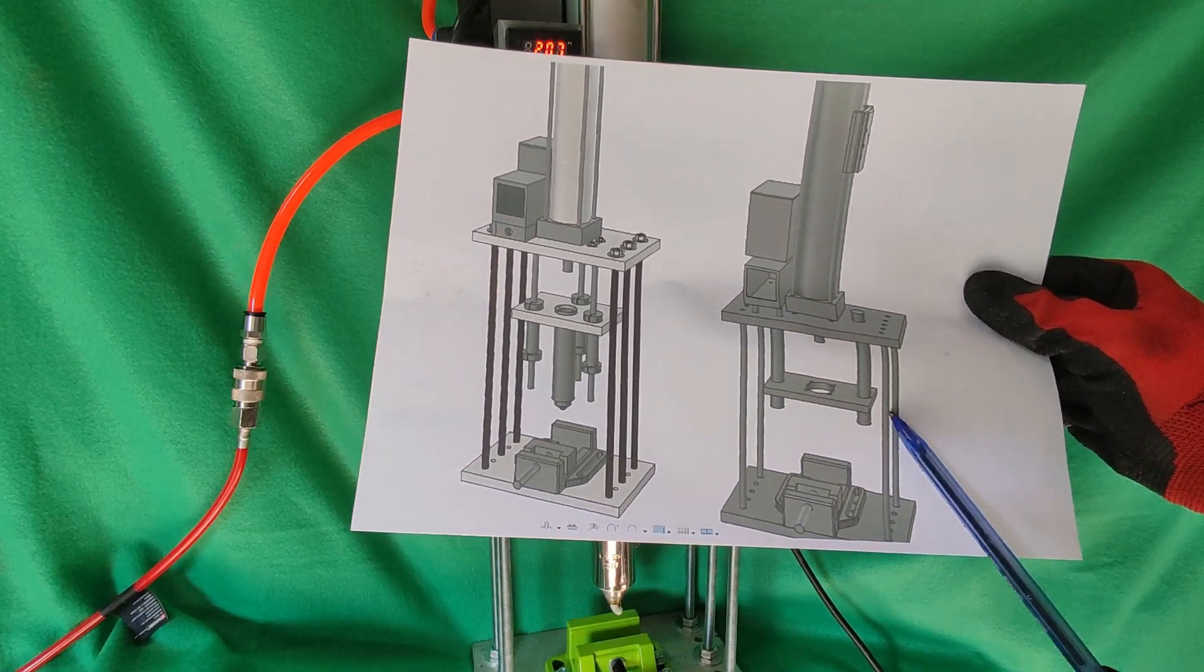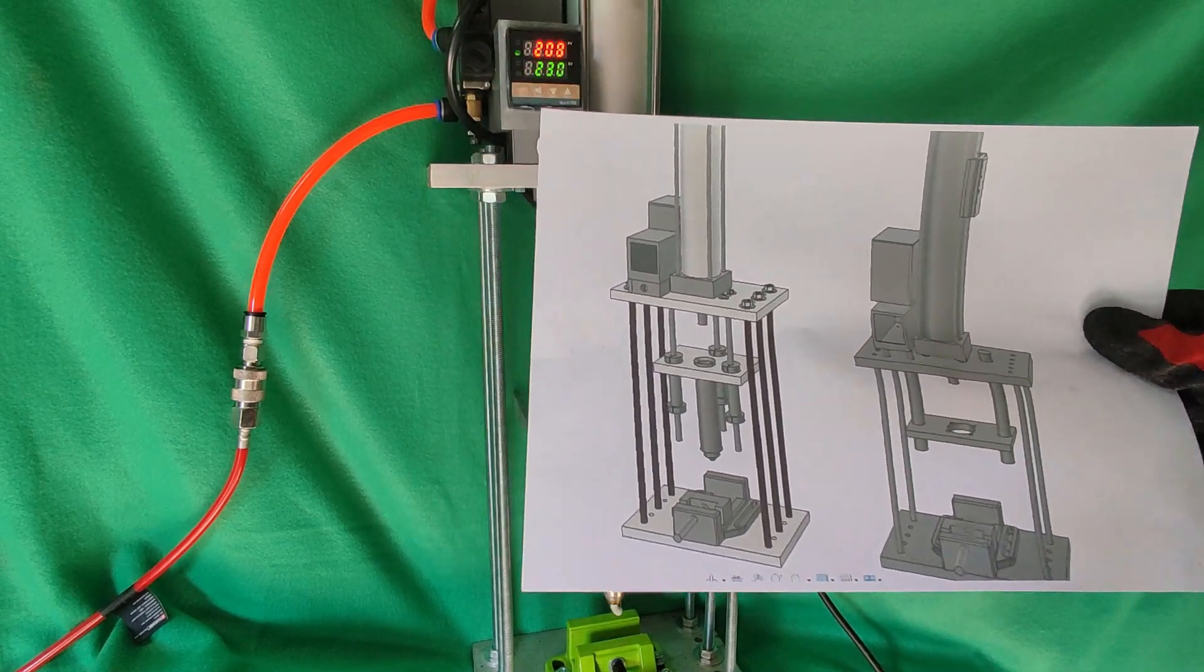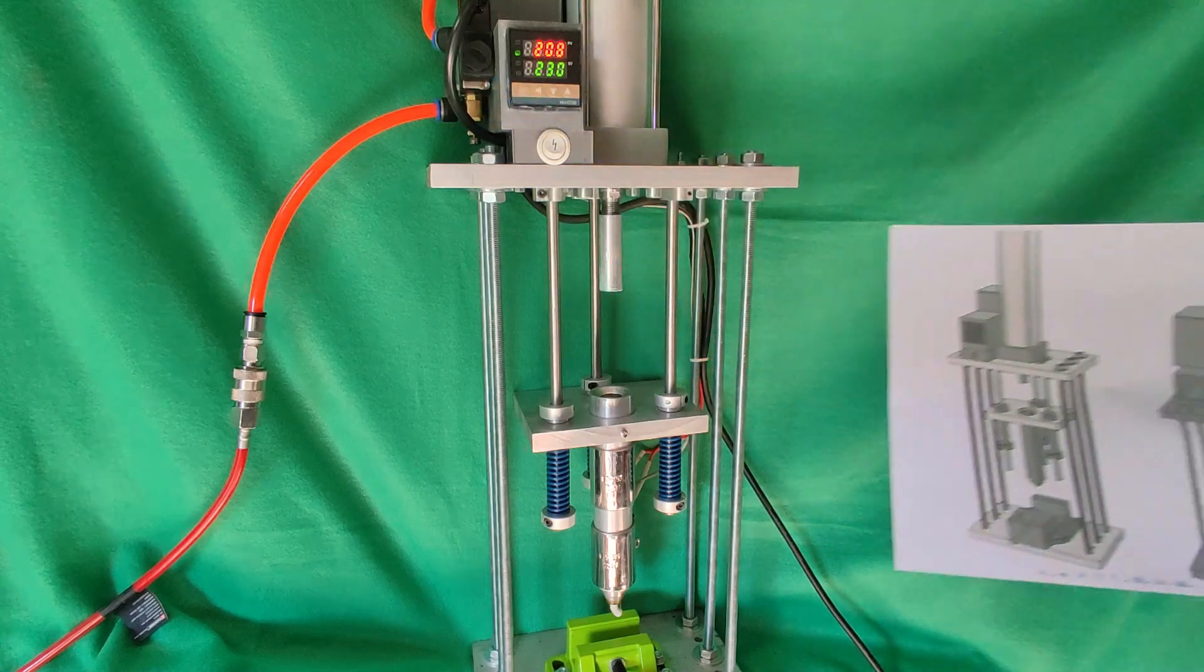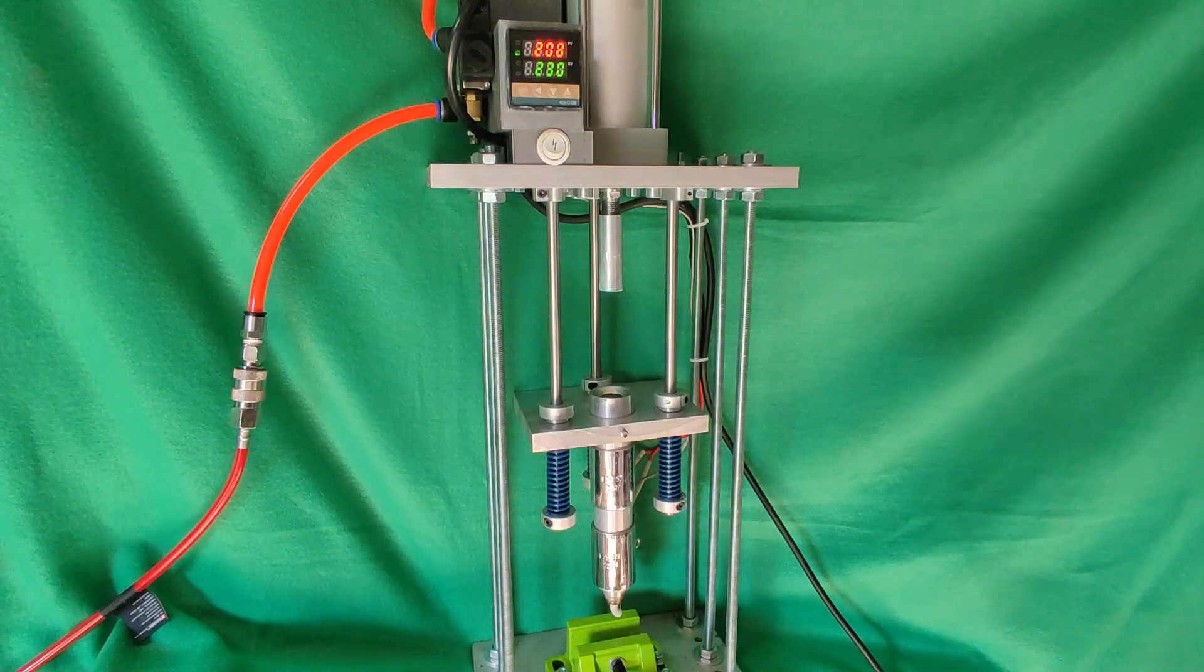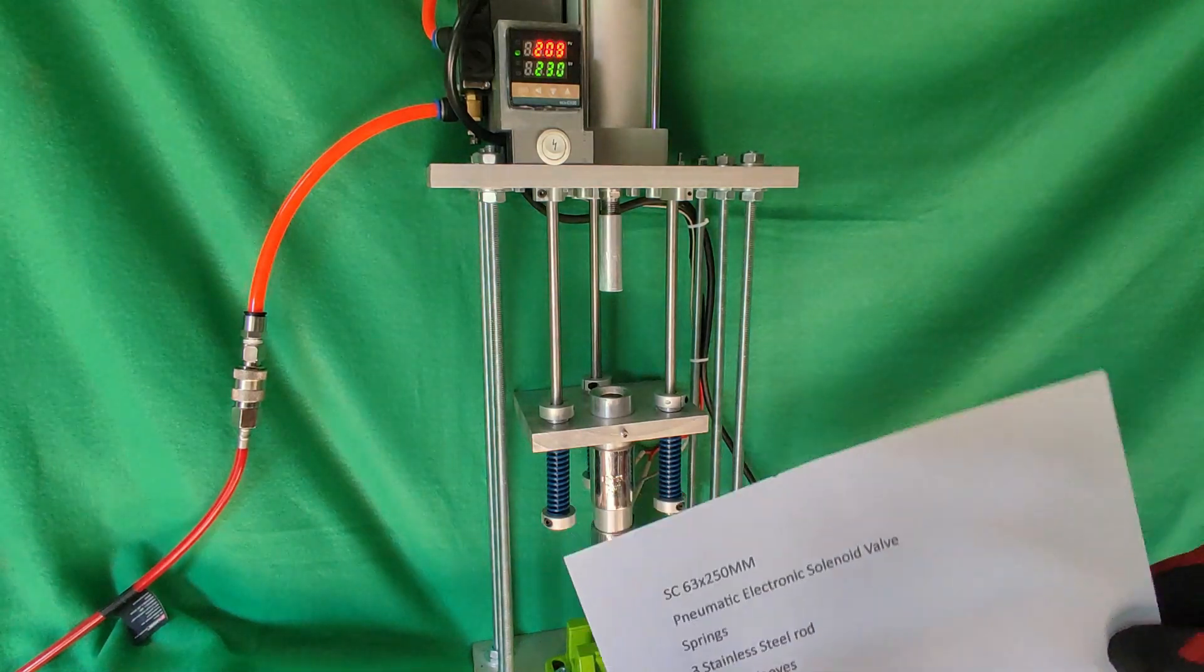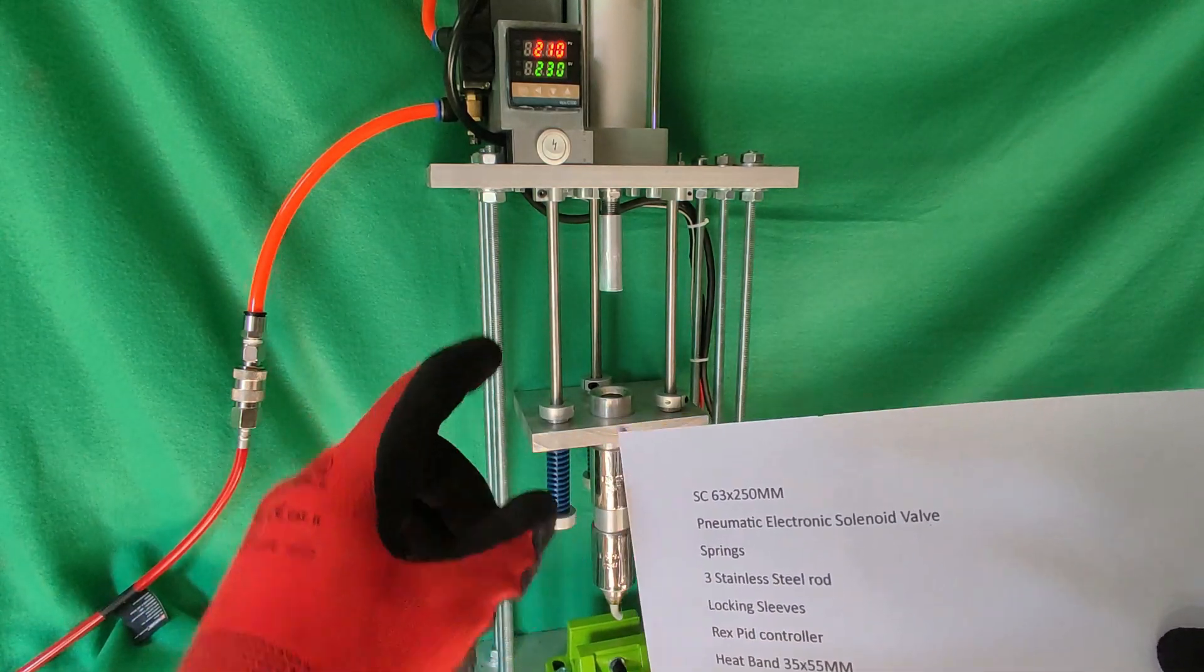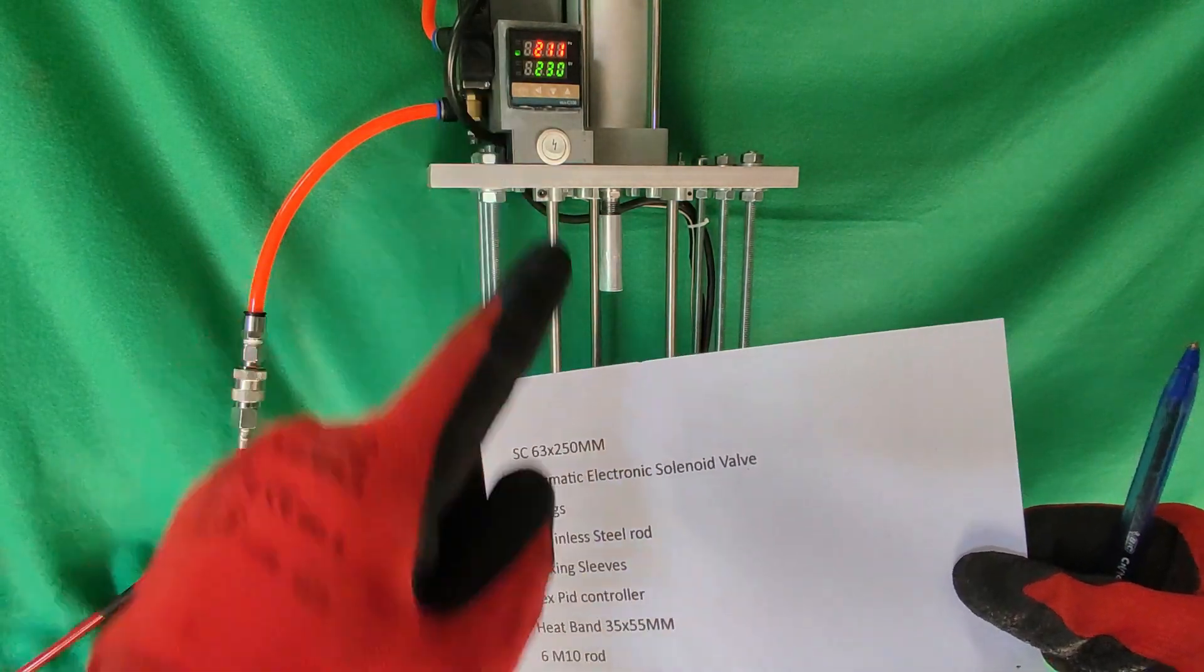Here you see there's four and here there's six. Then I modified the placement for the electronic solenoid valve here. That's pretty much it. It features SC63 by 250mm, basically a 63mm wide cylinder with 25cm of plunging.